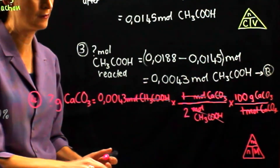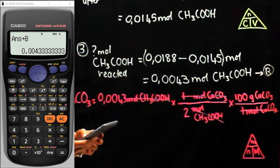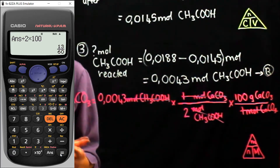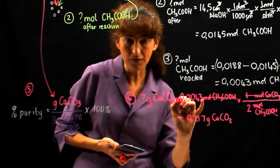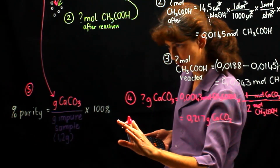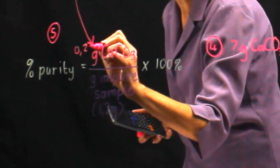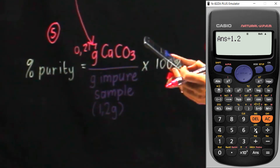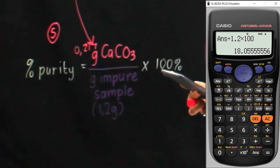Let's do this calculation: 0.0043 ÷ 2 × 100 = 0.216 grams of calcium carbonate. Remember, that's not the end — we still have step five. We need to substitute this into the percent purity equation: 0.216 ÷ 1.2 × 100 = 18.055. Rounded off: 18.06%.